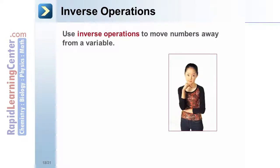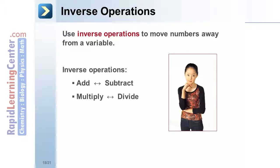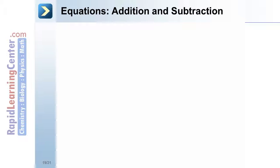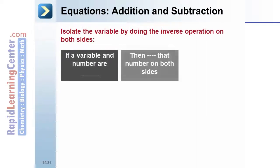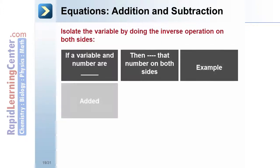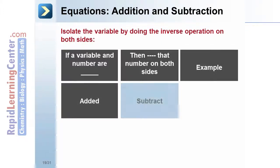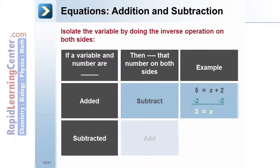Use inverse operations to move numbers away from a variable. Examples of inverse operations include addition and subtraction, and multiplication and division. To isolate the variable using addition and subtraction: if a number is being added to a variable, subtract that number from both sides; if a number is being subtracted from a variable, add that number to both sides.